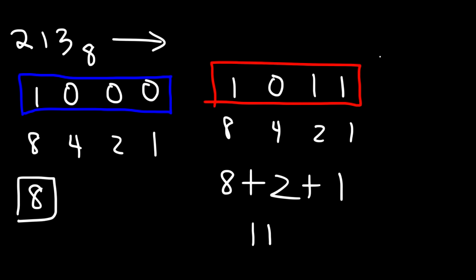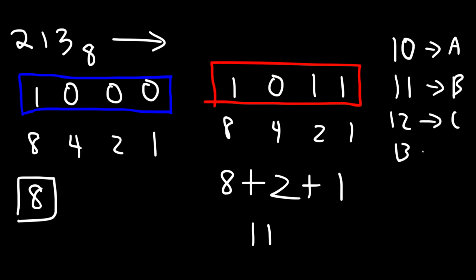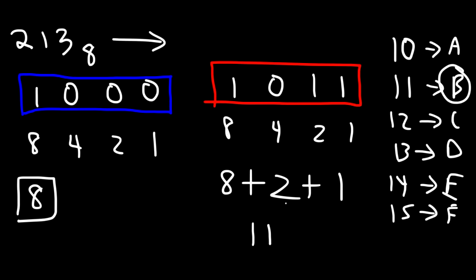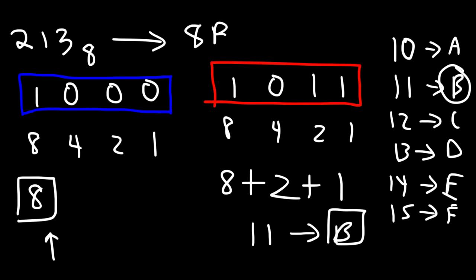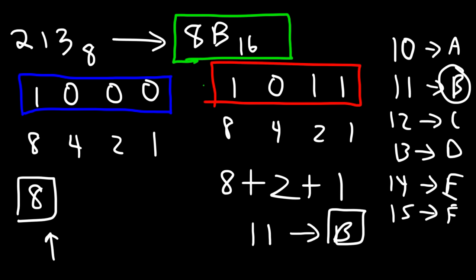Now you need to know that in the hexadecimal system, 10 corresponds to A, 11 corresponds to B, 12 corresponds to C, 13 corresponds to D, 14 corresponds to E, and 15 corresponds to F. So since we have 11, we replace it with B. So we have an 8 and a B — meaning 213 in the octal system corresponds to 8B in the hexadecimal system. That is our final answer.